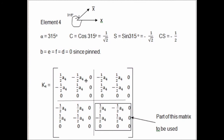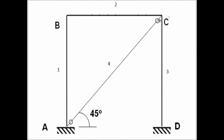Now we have found the matrix for each element: AB, BC, CD, and AC. But now we have to find the combined matrix for BC. The stiffness of AB, CD, and AC will also contribute to the BC node. What we have to do is combine the stiffness portions which are related to B and C.